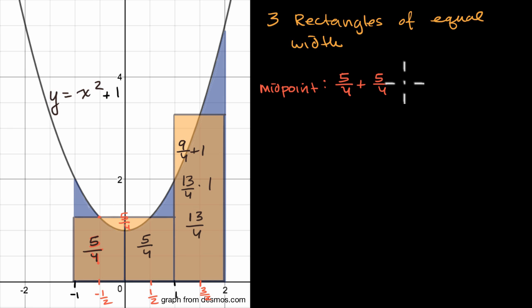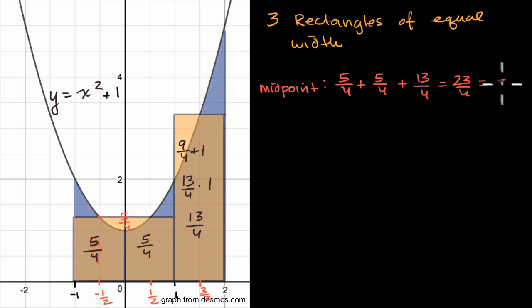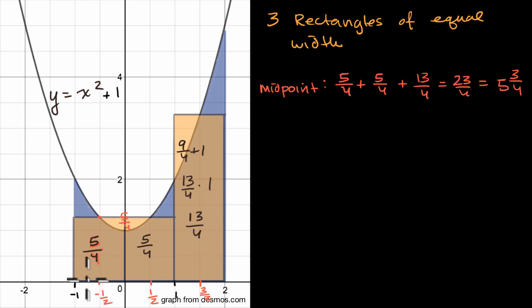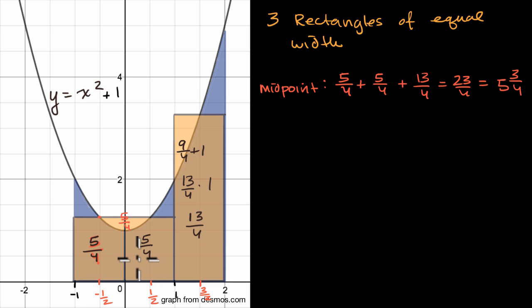Adding these up: five-fourths plus five-fourths plus thirteen-fourths gives us twenty-three over four, which is the same as five and three-fourths. This is known as the midpoint approximation, where we use the midpoint of each interval to define the height of the rectangle. But this isn't the only way — we could also look at the left endpoint or the right endpoint, and let's do that quickly here.